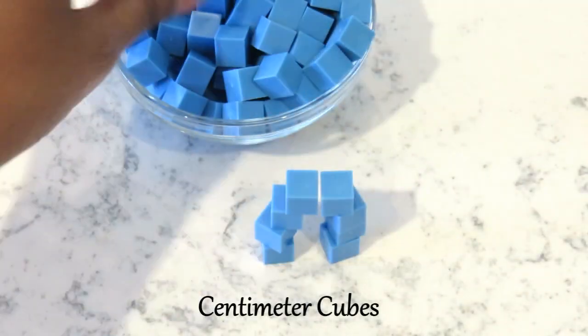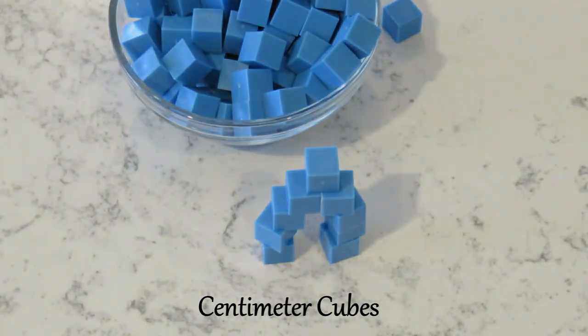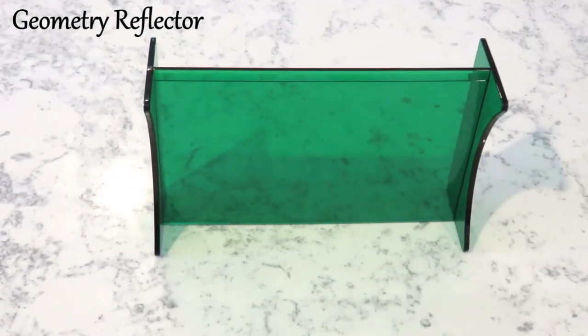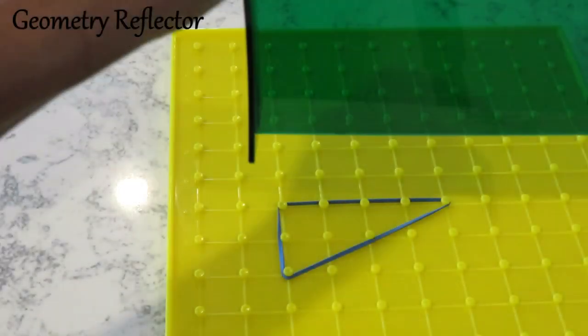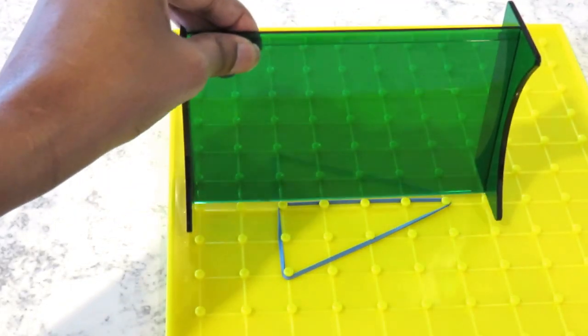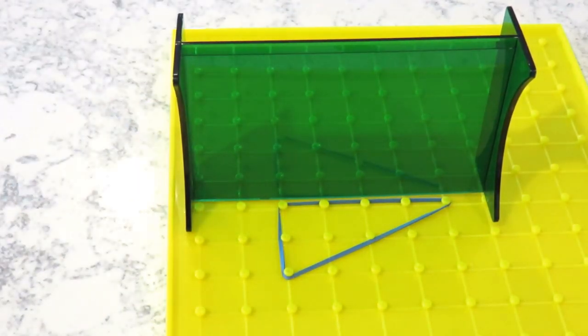These centimeter cubes. I needed a reflector. You use this in different ways. So far we have been using it to look at symmetrical shapes and to reflect shapes from the geoboard. I have never seen anything like this before, so it's a really interesting part of the program.